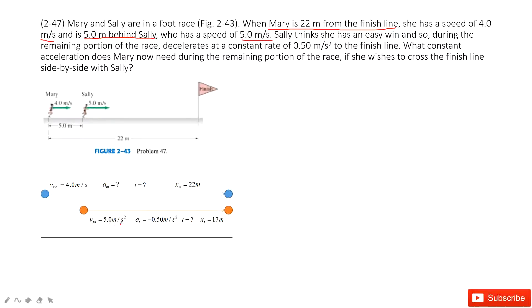That means the initial velocity for Sally is 5 meters per second. Sally thinks she has an easy win, and so during the remaining portion of the race, she just decelerates at a constant rate of 0.5 meters per second squared to the finishing line.